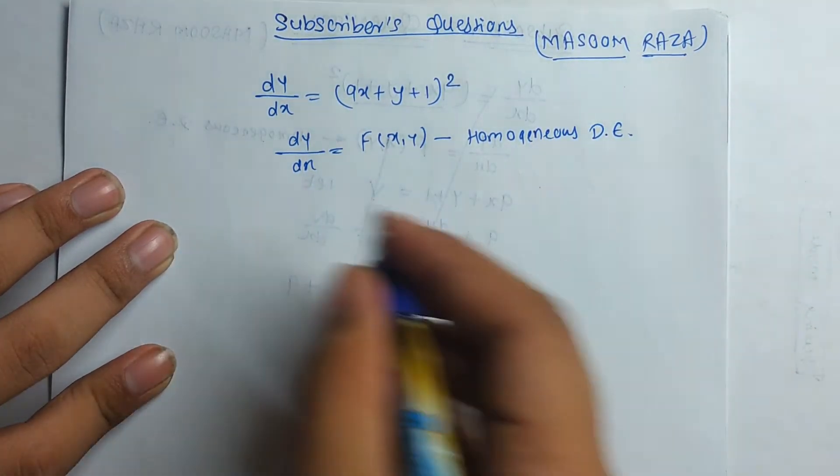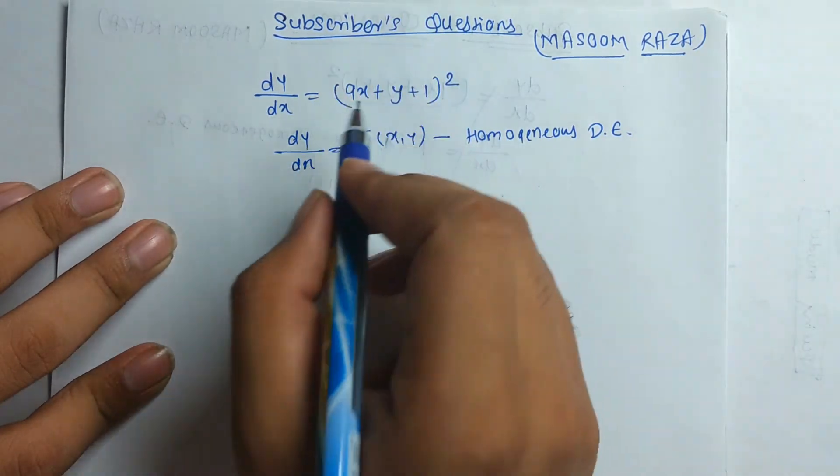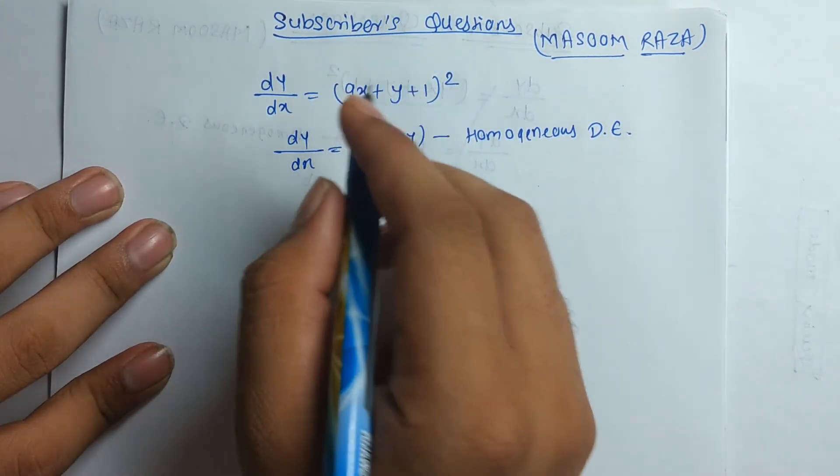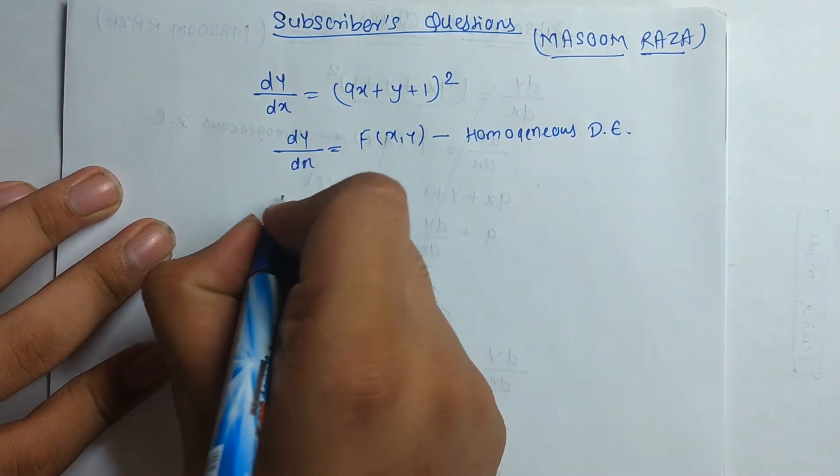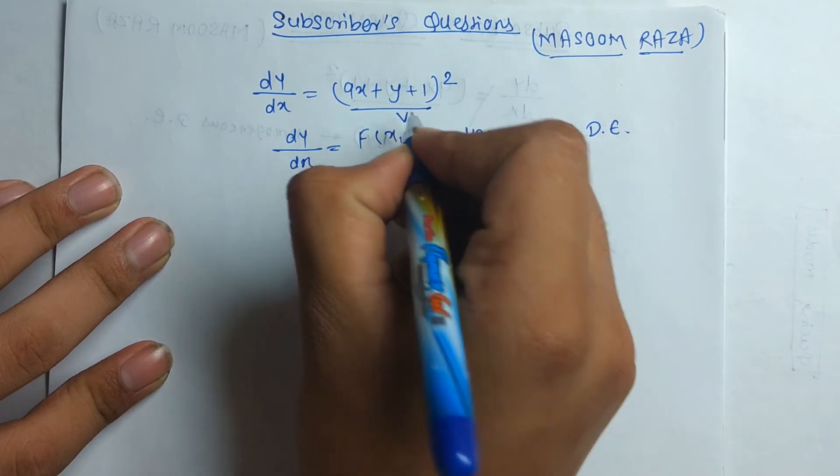To solve this, we have to make the substitution. When you find the square term, always remember that that square term as a v, means remove the square. Here we have make a substitution 9x plus y plus 1 is a v.